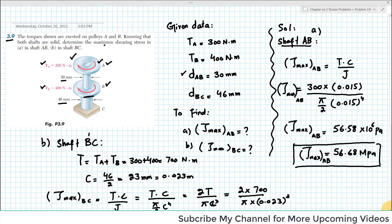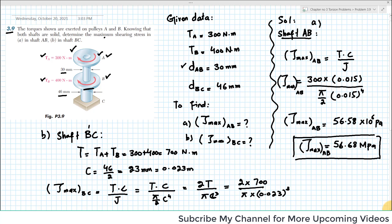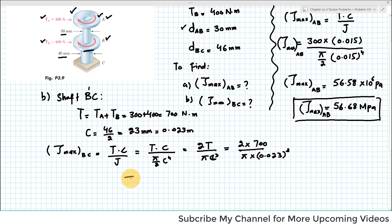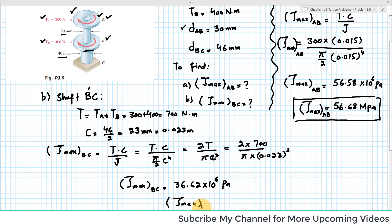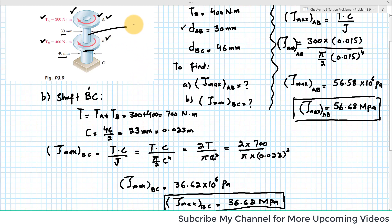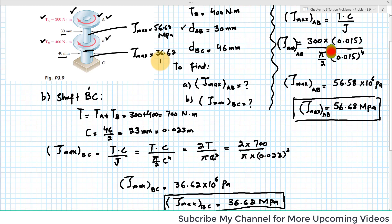Solving this, τ_max in shaft BC comes out to be 36.62 × 10⁶ Pascal, which is 36.62 MPa. This is the answer for part B — maximum shear stress in BC. So we conclude that the maximum shear stress in shaft AB is 56.58 MPa and the maximum shear stress in shaft BC is 36.62 MPa.